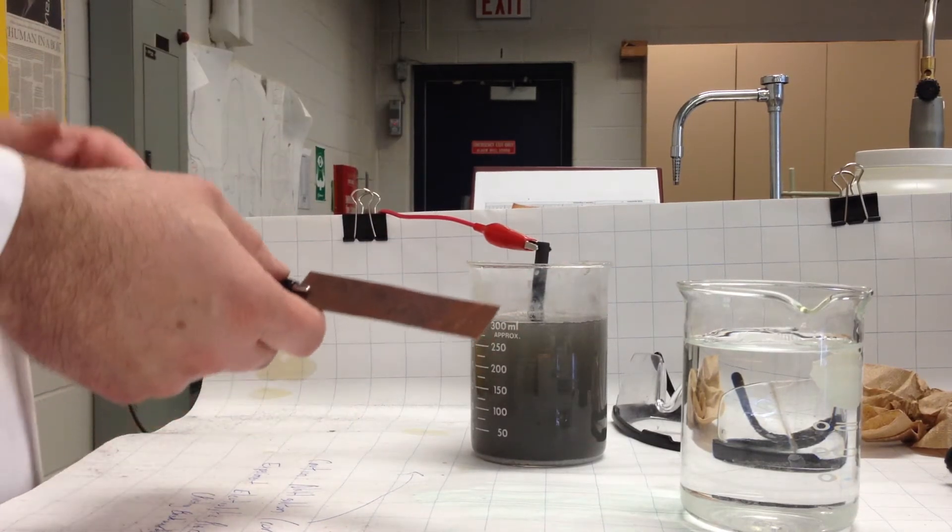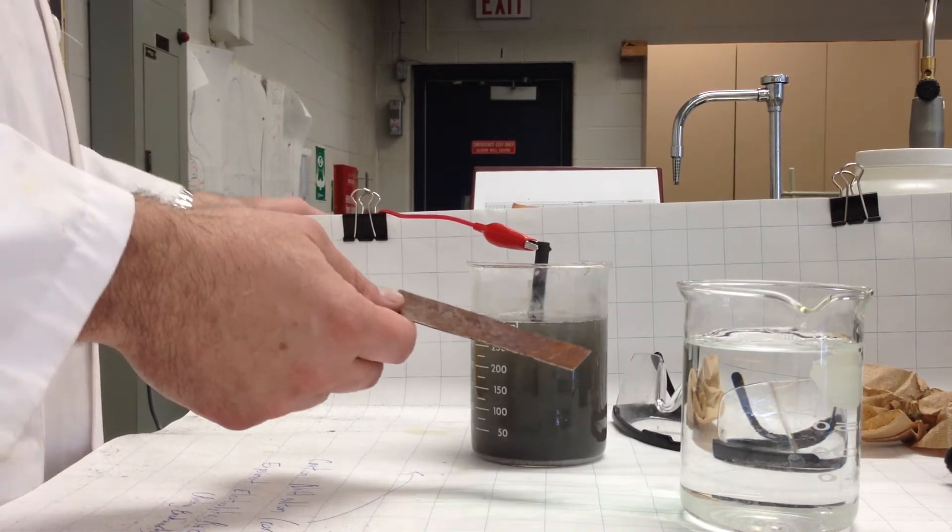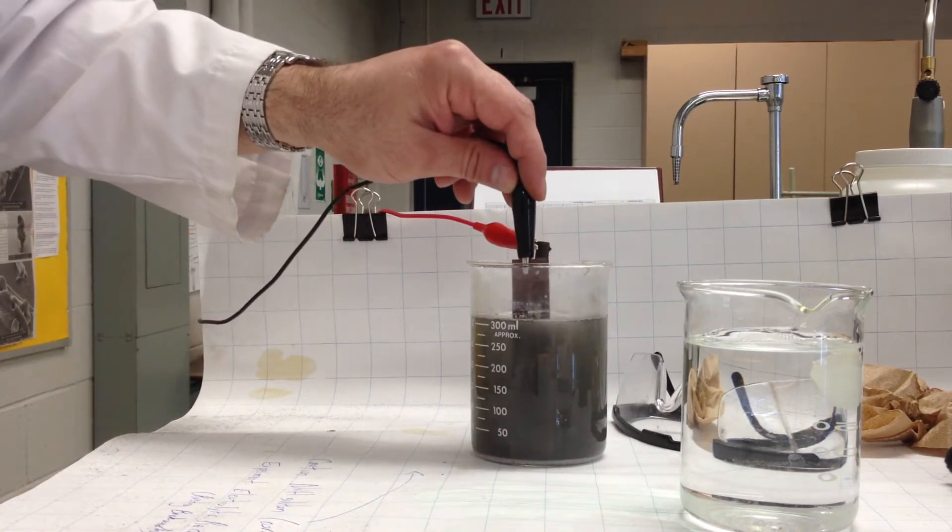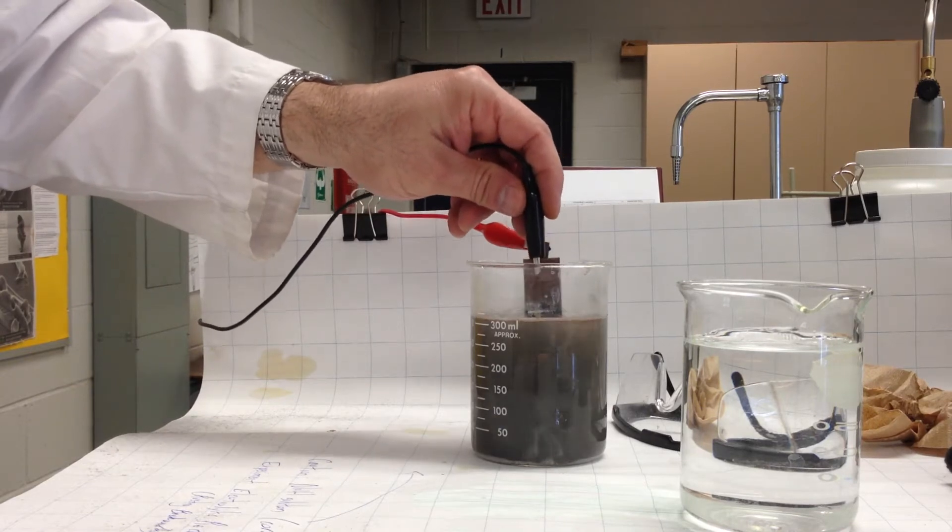Now I've used a pretty high overvoltage. I've got it set to about 20 volts to speed up the reaction. But I understand that when museum curators do this, they use much lower voltages and they allow the process to take place over a much longer period of time.